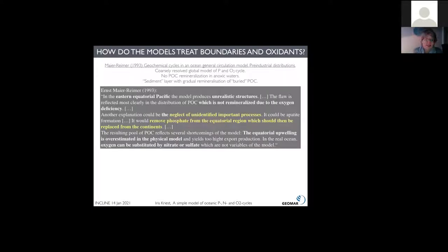When he analyzed the results, he noted some very interesting things. He stated in this paper, just a collection of quotes: in the eastern equatorial Pacific, the model produces unrealistic structures. The flaw is reflected most clearly in the distribution of POC, which is not remineralized due to the oxygen deficiency. Then he started to look for explanations for this flaw. He hypothesized it could be the neglect of unidentified important processes, such as apatite formation, which would remove phosphate from the equatorial region, which would then be replaced from the continents.